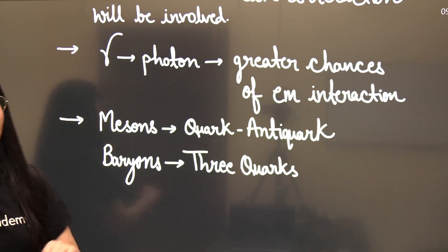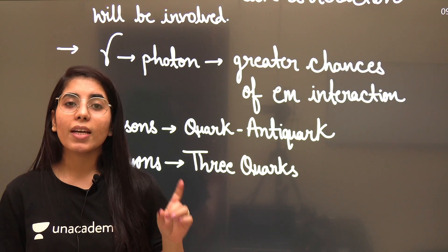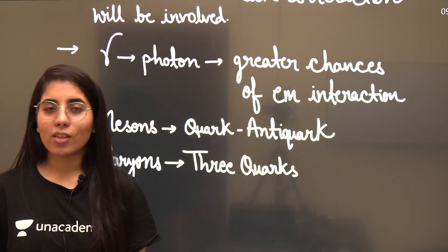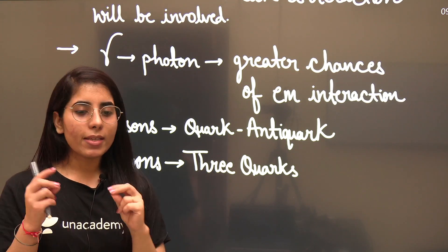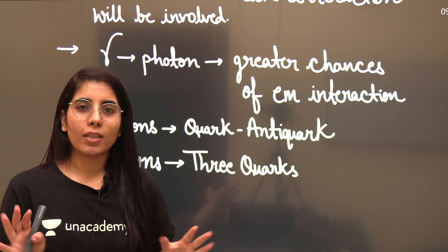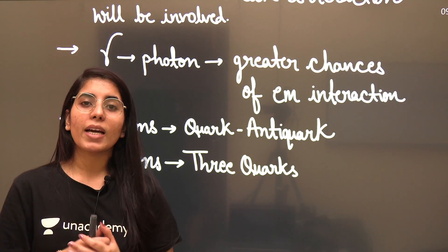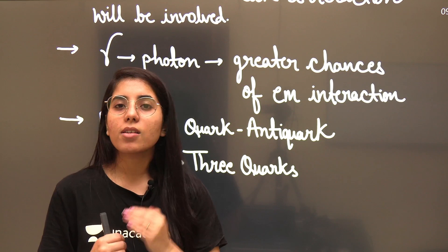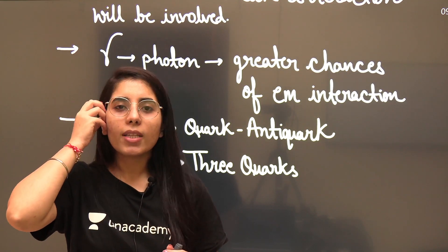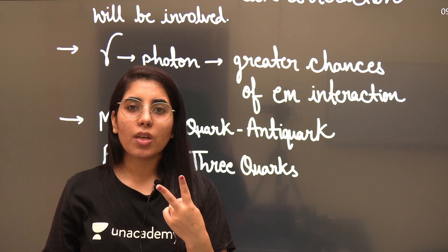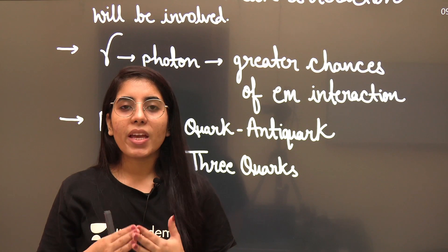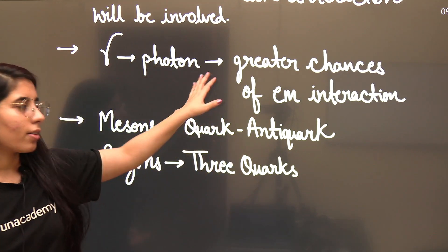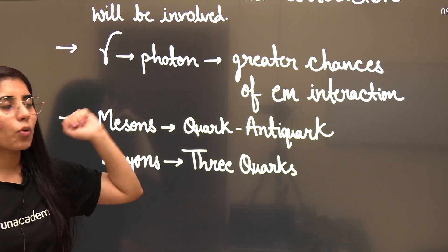The third point: if a gamma ray (photon) is present in a given reaction, it increases the chances that the reaction is taking place via electromagnetic interaction. Sometimes just observing the reaction gives you the exact answer. If you are confused between two reactions both containing gamma, you need to check other conservation laws to distinguish between them.